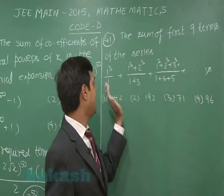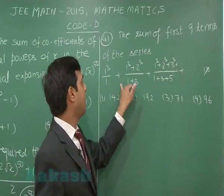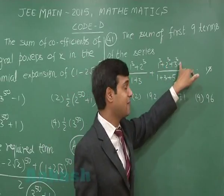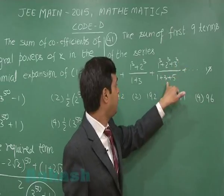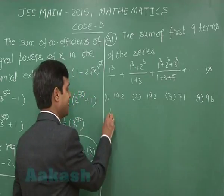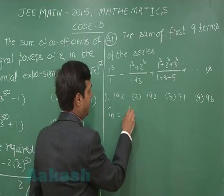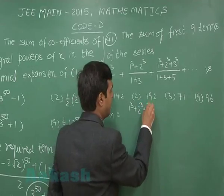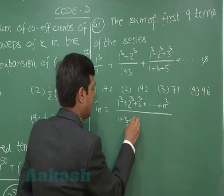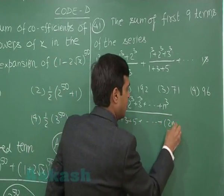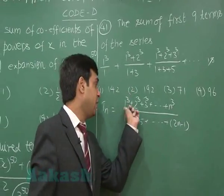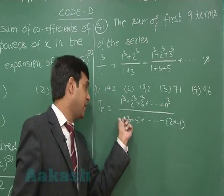Go to the next. That is 41. The sum of first 9 terms of the series: 1³/1 + (1³ + 2³)/(1 + 3) + ... and so on. Four options are given after that. So let us consider the general term. We can find another term of this series. In numerator it will be summation n³, in denominator sum of odd terms.